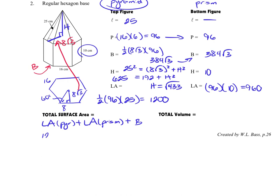So we're going to have our 1,200 plus our 960, plus that base that we calculated earlier, that 384 square root of 3. Adding all that together, we're going to get 2,160 plus 384 square root of 3 centimeters squared.